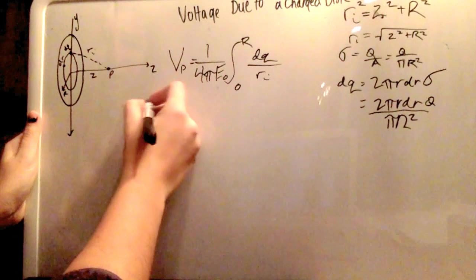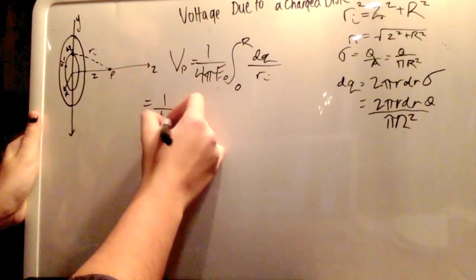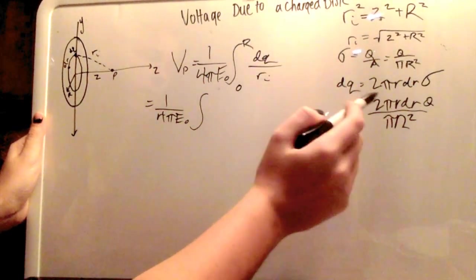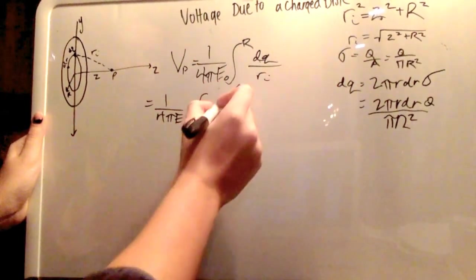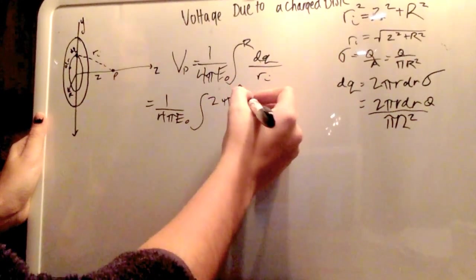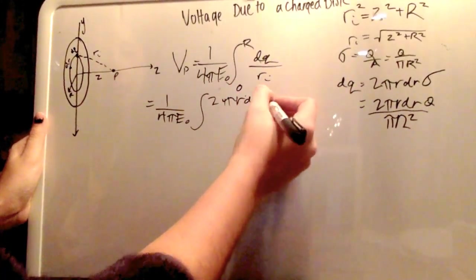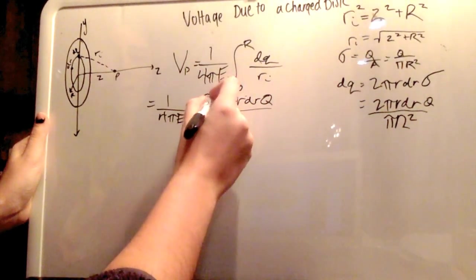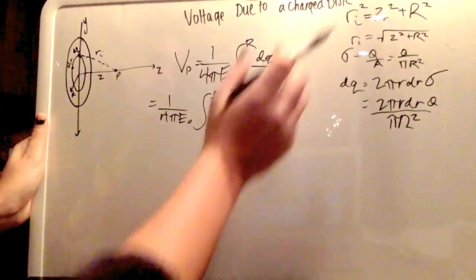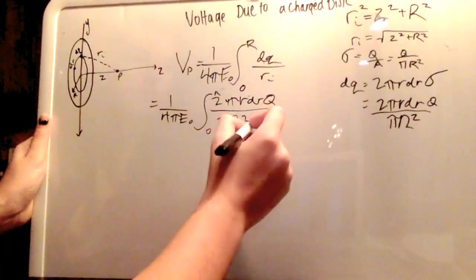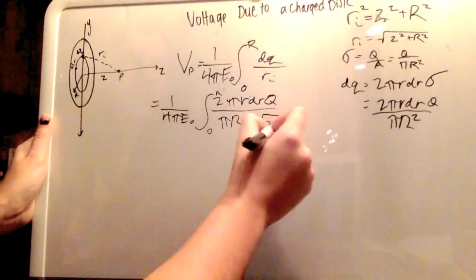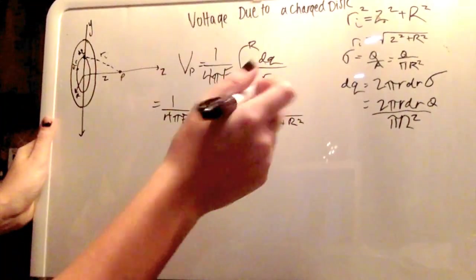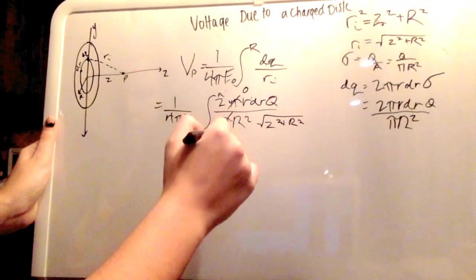Okay, now next, you keep the 1 over 4 pi epsilon nought, but then you substitute in this whole equation, right here, so 2 pi r dr q, all over pi r squared, and then see how this ri is here, this is where we're going to substitute this in, so times root z squared plus r squared. Okay, now the pi's cancel out.